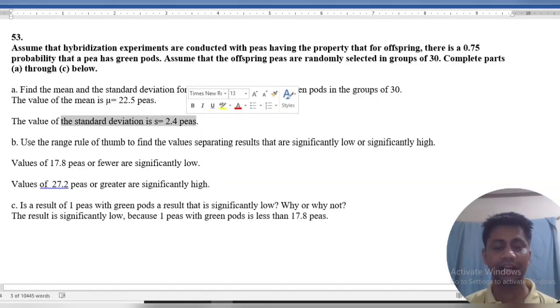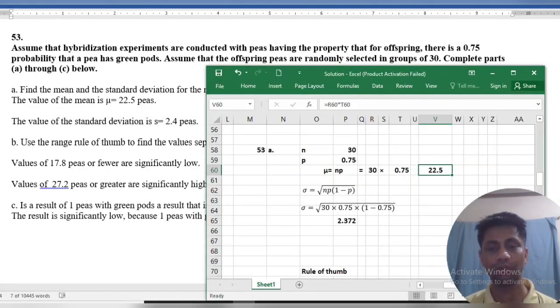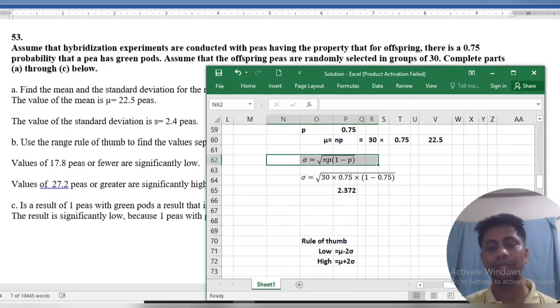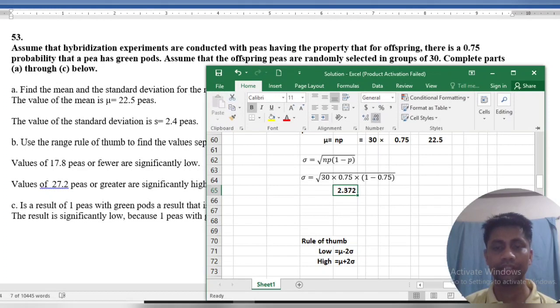The value of the standard deviation is - we know the formula is the square root of n times p times 1 minus p. We can calculate this formula and we get a standard deviation of 2.4.